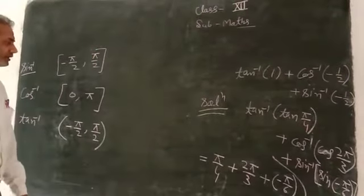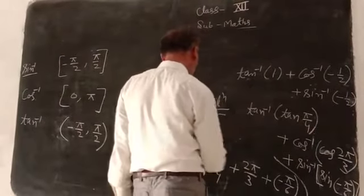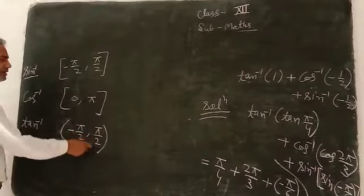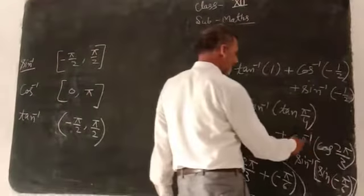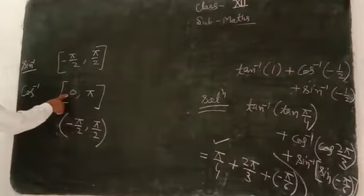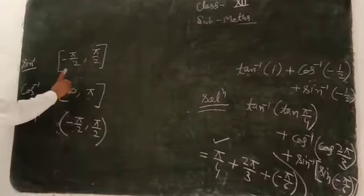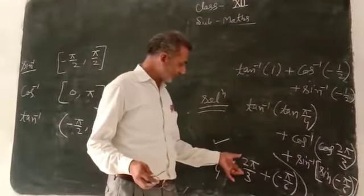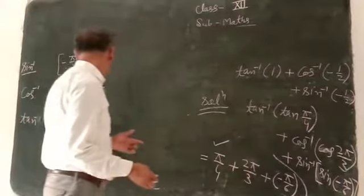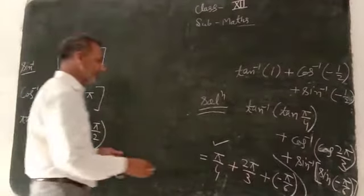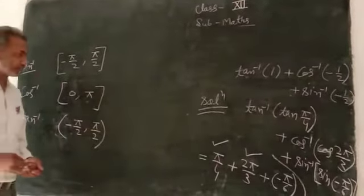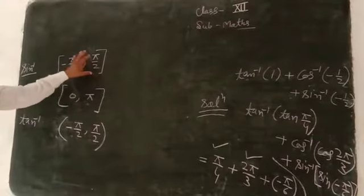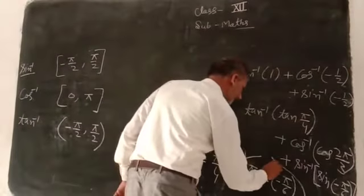It is so important. In case of tan, π by 4, 45 degrees, this will belong because minus 90 to 90, so 45, this will be correct. Now if you are aware, in case of cos inverse, 0 to 180 degrees, to π. The value of this is 120 degrees. This is correct. And in case of sin, minus π by 6, minus 30, it will belong. Correct.